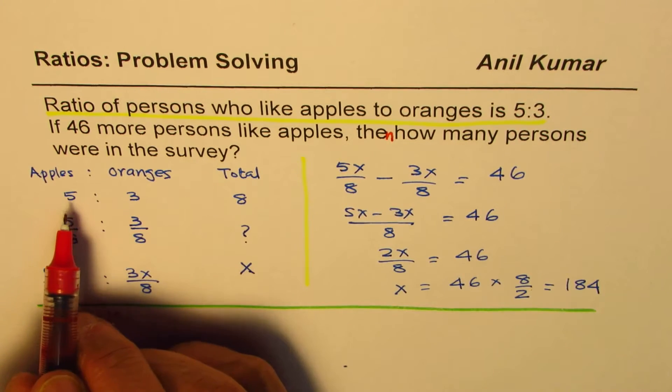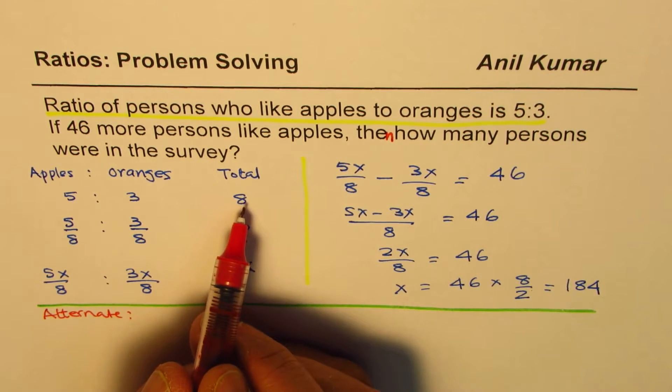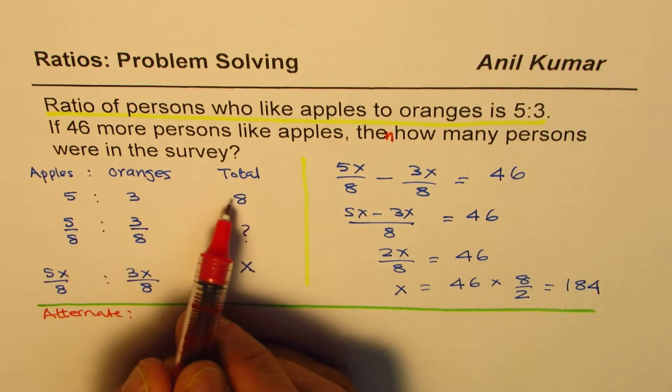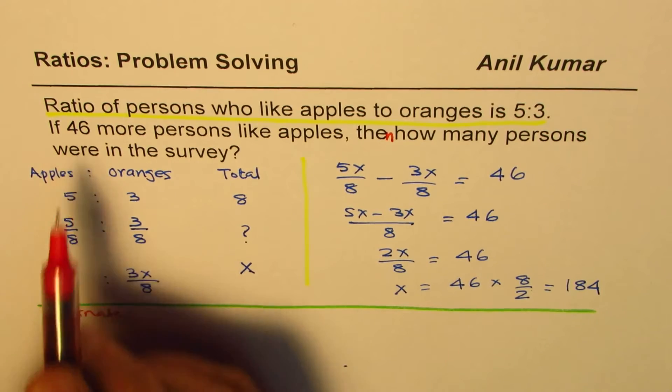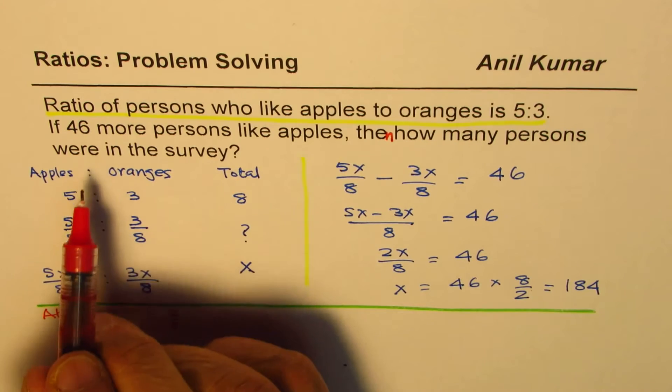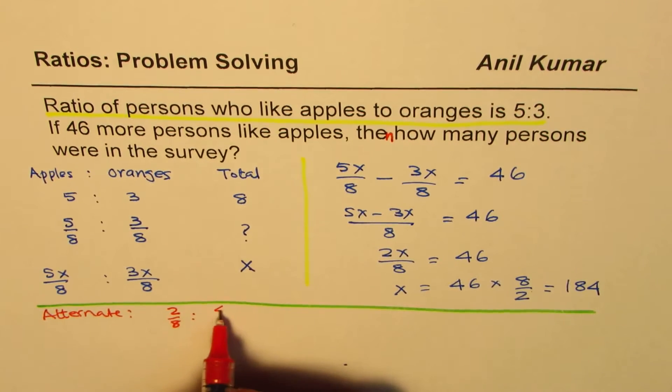From here, 2 out of 8. 2 persons like more apples than oranges out of 8. So the ratio basically is 2 out of 8. Now we want to know 46 out of how many?